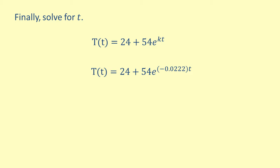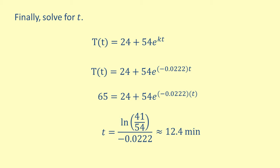We want to solve for t when capital T of t equals 65. This gives us t equals the natural log of 41 over 54, all divided by negative 0.0222. This is approximately 12.4 minutes.